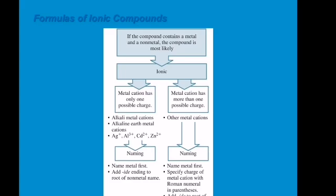For metal cations with only one possible charge, we have the monoatomic ions — the alkali metal and alkaline earth metal cations — such as Ag+, Al3+, Cd2+, and Zn2+. These elements have only one possible charge. To name them, you name the metal first, then add the -ide ending to the root of the non-metal name.